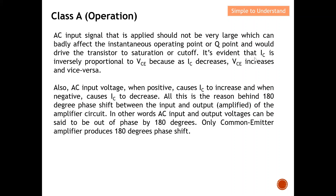When the AC input voltage is positive, it causes IC to increase; when negative, it causes IC to decrease. This is the reason behind the 180-degree phase shift between the input and output of the amplifier circuit. In other words, the AC input and output voltage are out of phase by 180 degrees. Only the common emitter amplifier produces this 180-degree phase shift. With this, I'd like to end my discussion on Class A amplifiers.